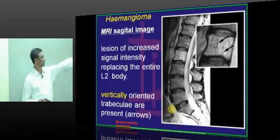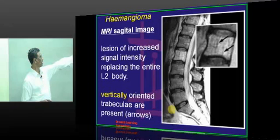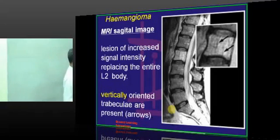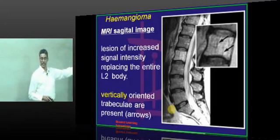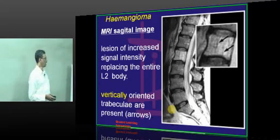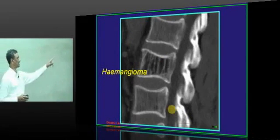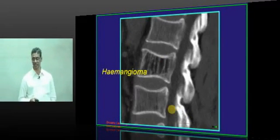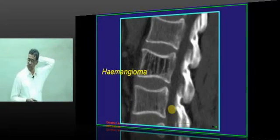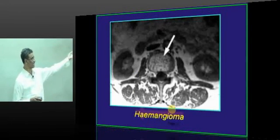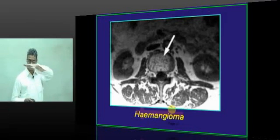See this image — vertical striations are visible. There is a lesion with increased signal at the L2 body, with vertically oriented trabeculae. Again, a clear-cut case of hemangioma showing vertical orientation. In cross-section, the vertical trabecular pattern will appear like this.